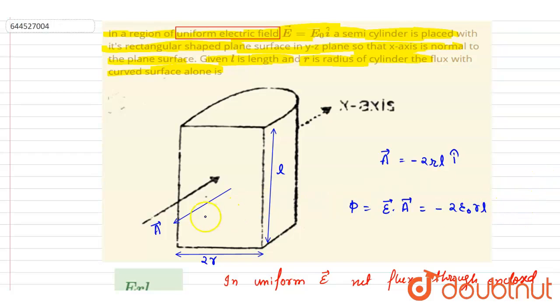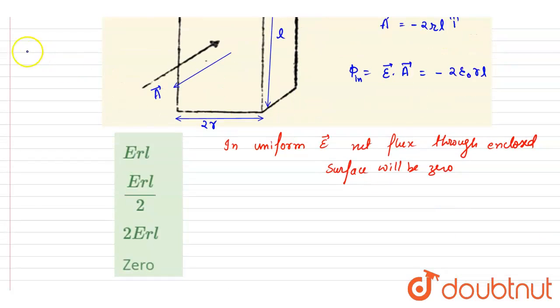This will be the flux through this surface. So if I say here this is flux in, so flux will be out from this surface so net flux would be zero.